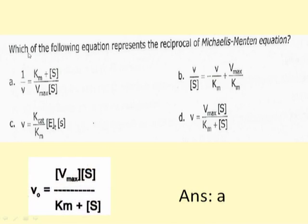The next question asks which equation represents the reciprocal of the Michaelis-Menten equation. When we invert the Michaelis-Menten equation, we should get 1/V on the left-hand side. Only one option shows this. Scrutinizing further, it is an exact reciprocal of the Michaelis-Menten equation. There is no doubt the answer is A.